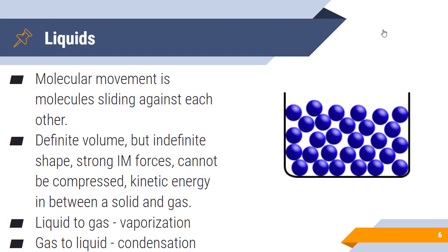When we look at liquids, molecular movement is molecules sliding against each other. Think about a shopping center on Black Friday. You're moving around and you're bumping into each other in a very tight space. You're not just vibrating in a fixed position, but you're able to move, but it's still relatively tight. Liquids have a definite volume but an indefinite shape, meaning they take the shape of the container they're in. They still have relatively strong intermolecular forces, they cannot be compressed, and kinetic energy is somewhere in between a solid and a gas.